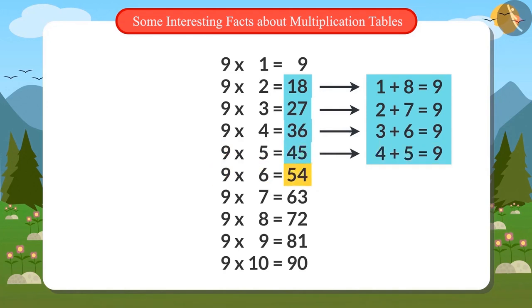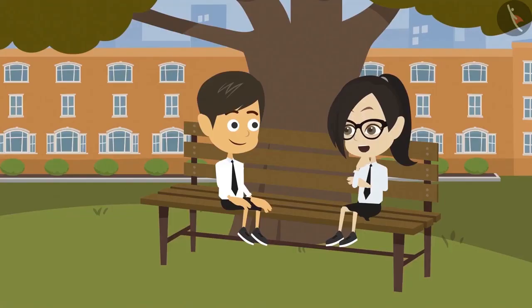The sixth number is 54. If we add 5 and 4, the answer is again 9. Now the seventh number in the table of 9 is 63. Adding the digits 6 and 3, the answer again is 9. Wow!